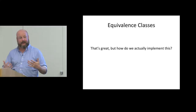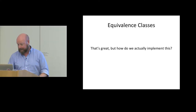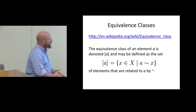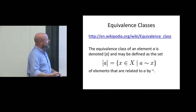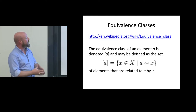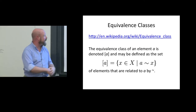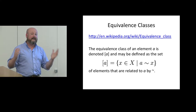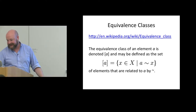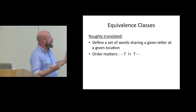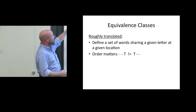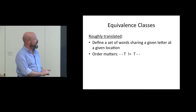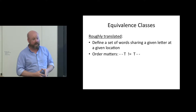You can get a sense of how you would play this with friends if you were working on paper. If we go out to Wikipedia, we'll see this — equivalence classes. The equivalence class of an element A is denoted brackets A; it may be defined as the set of elements that are related to A by tilde. What this basically translates to is: you should define a set of words sharing a given letter at a given location. And order matters — dash-dash-T is treated differently than T-dash-dash.